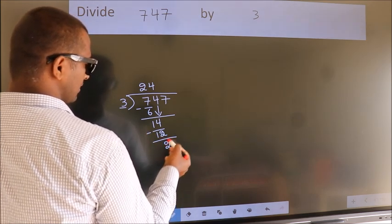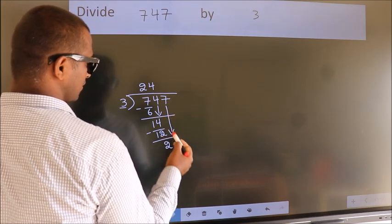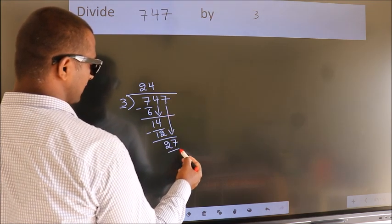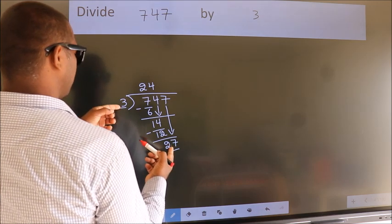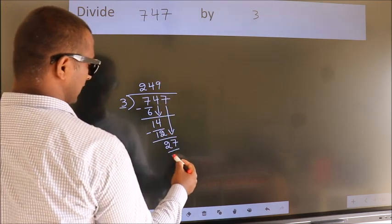After this bring down the beside number. So 7 down. So 27. When do we get 27? In the 3 table. 3 times 9 is 27.